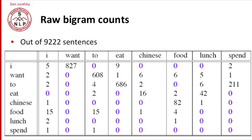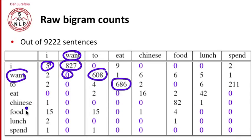First, let's start with the raw bigram counts from this small corpus of just under 10,000 sentences. So what I'm showing you here is a bigram count table. So here's the word I is followed by the word I five times. The word I is followed by the word want 827 times. The word want is followed by the word to 608 times. The word to is followed by the word eat 686 times. A lot of these counts are zeros because it just happened in this small data set that want was never followed by want.